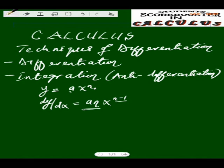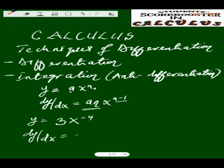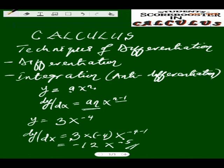I want to give an example here to refresh our memory. Given that y is equal to 3x raised to power minus 4, the derivative of y with respect to x is 3 times minus 4, then x raised to power minus 4 minus 1. So 3 times minus 4 will be minus 12 x to the minus 5. This is just a revision of what we did last week.